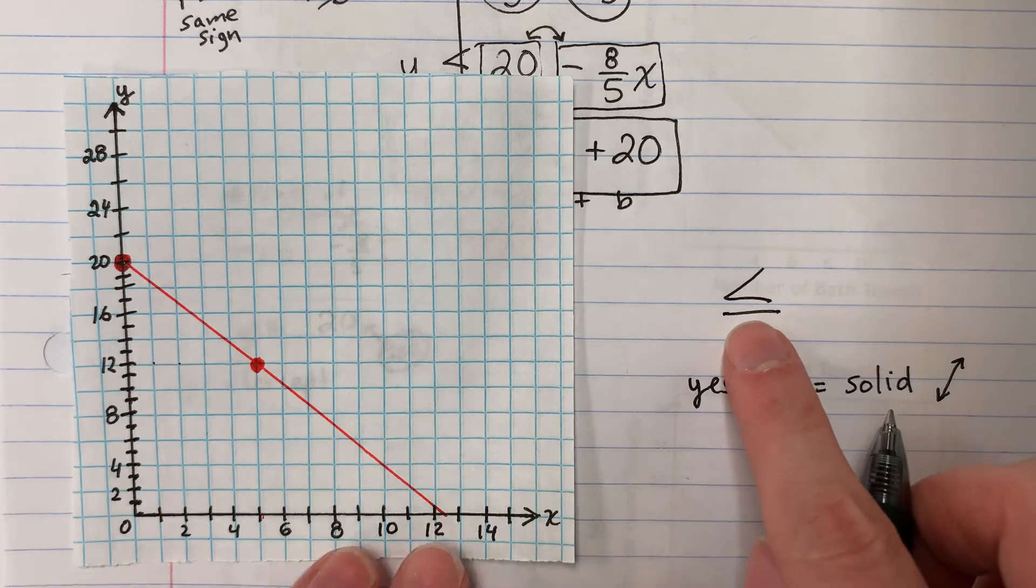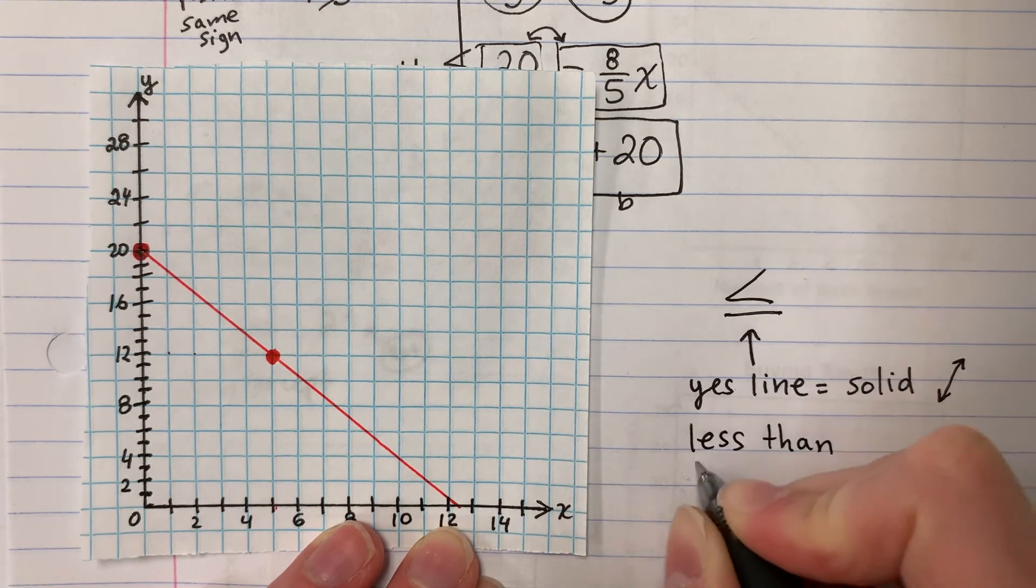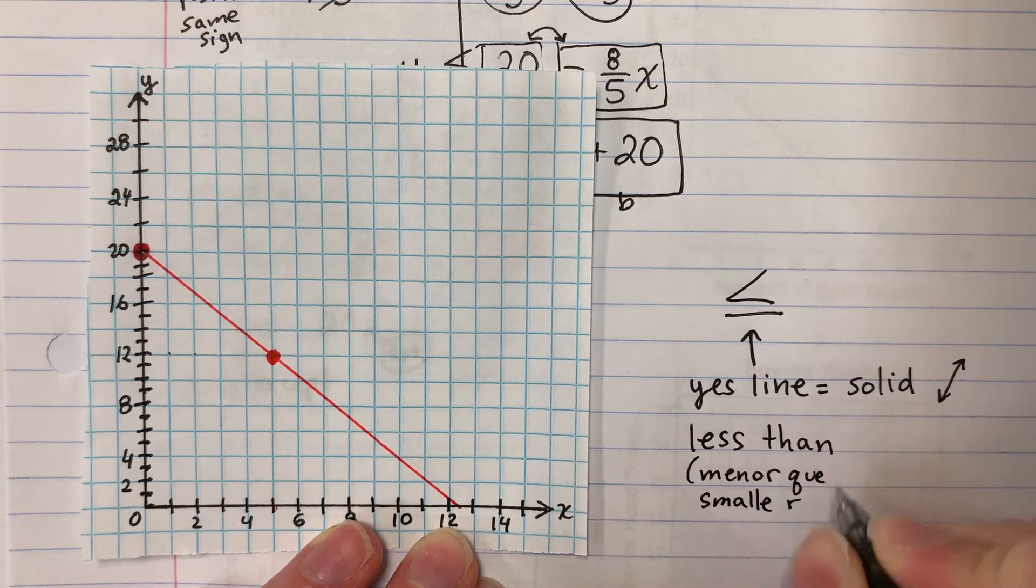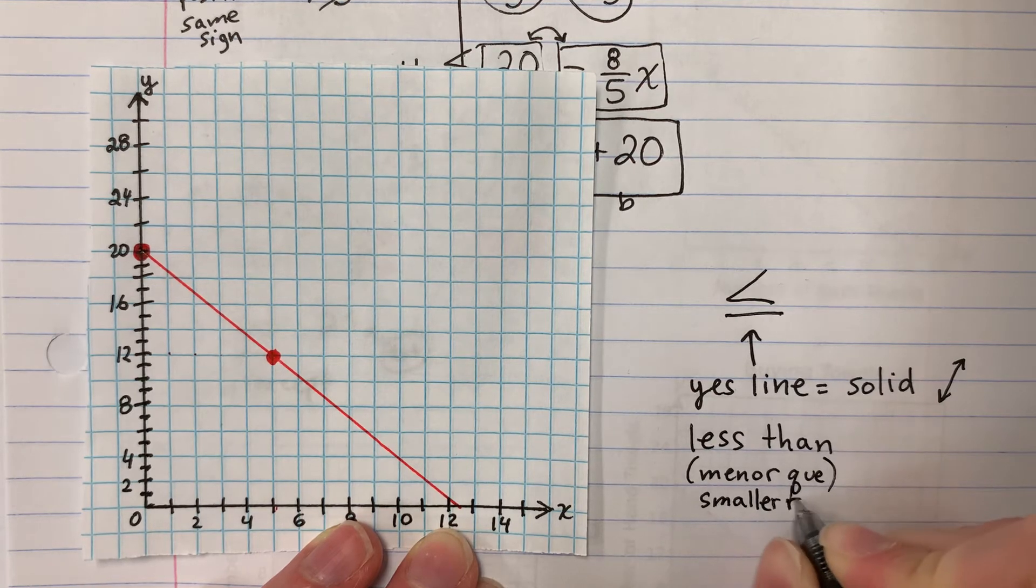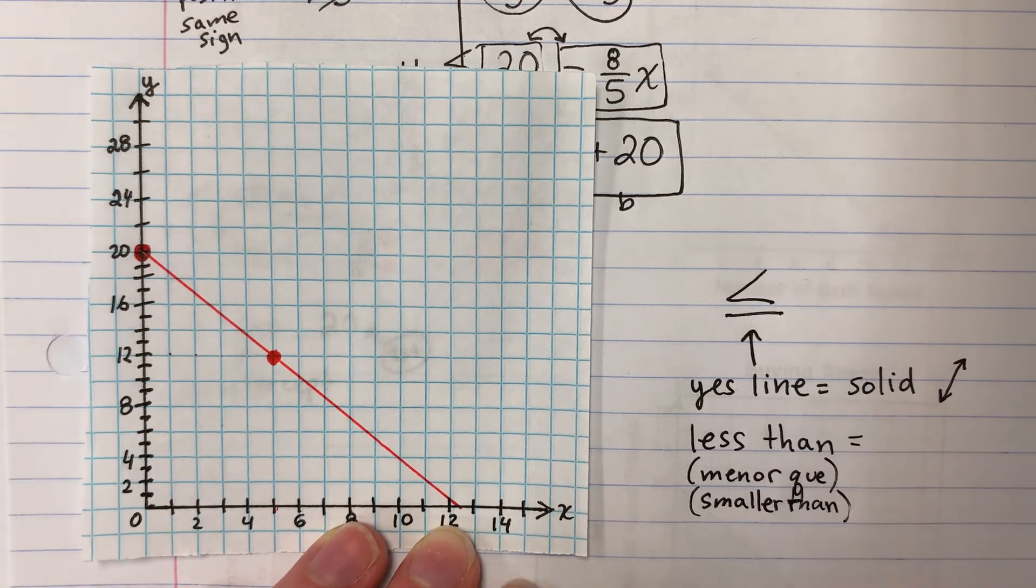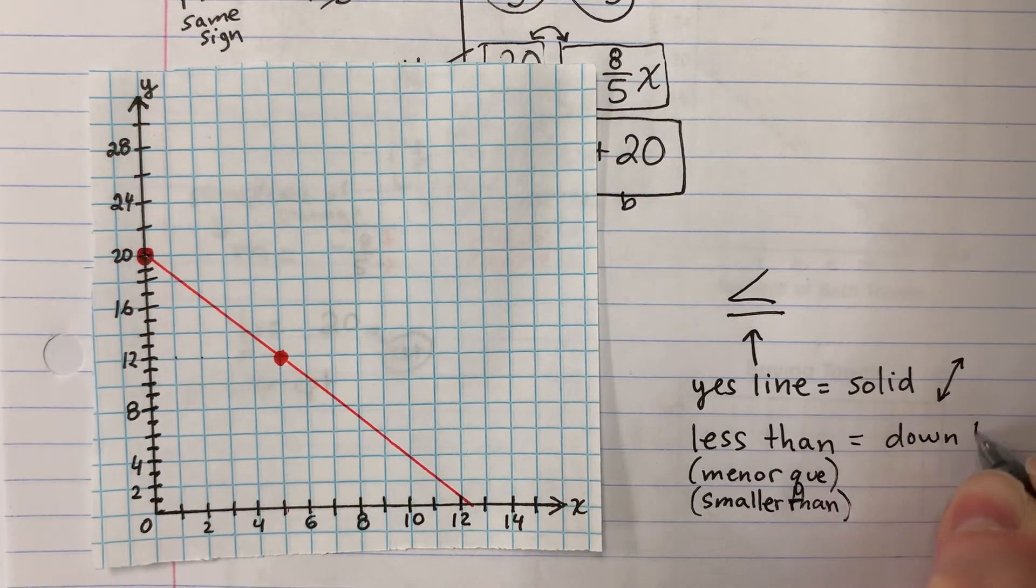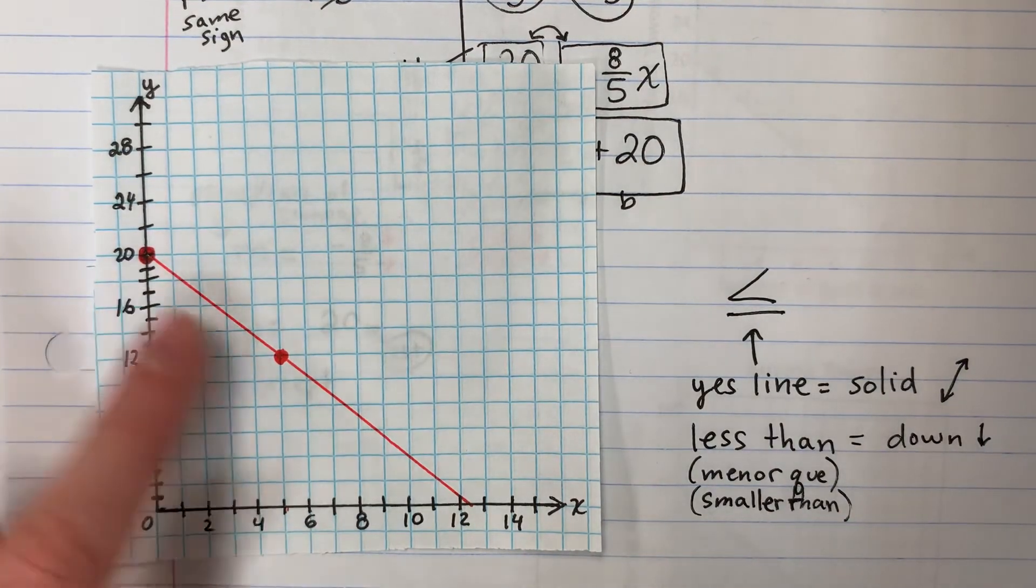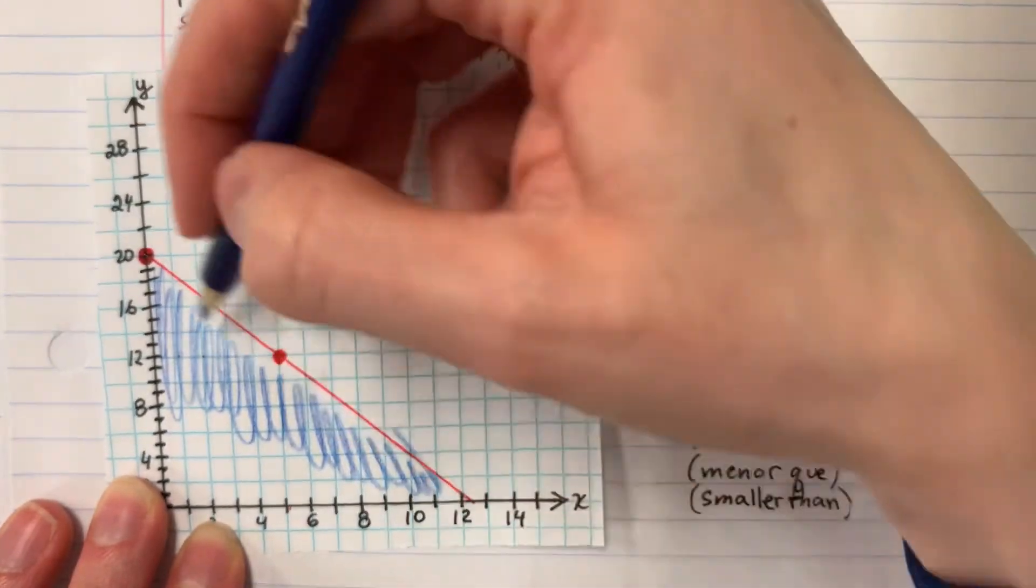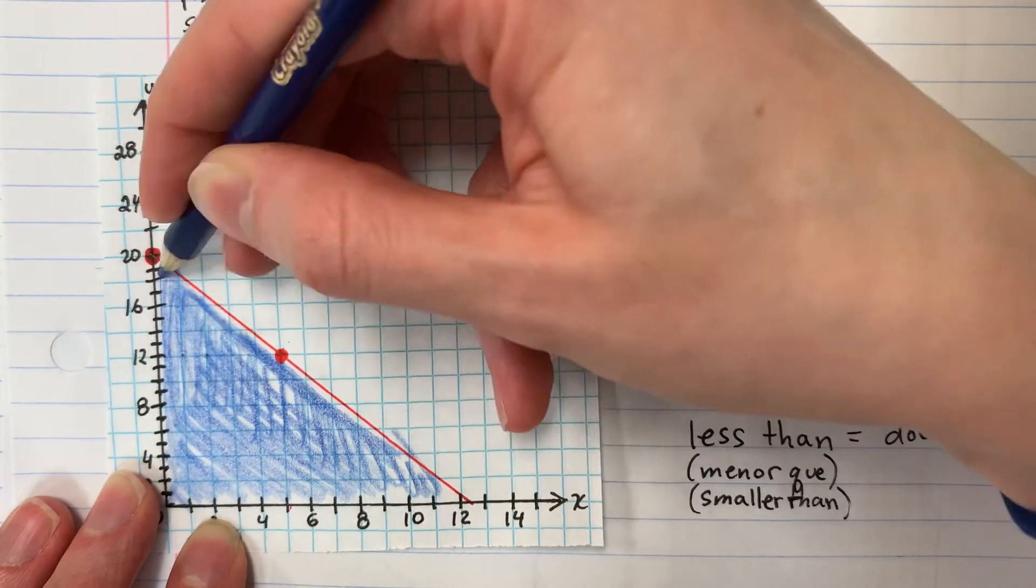And then this is greater or less. This is less than. Menor que. Or smaller. Smaller than. So less than. Small. Where are the small? Small is down. So we are going to color down from the line. That looks great.